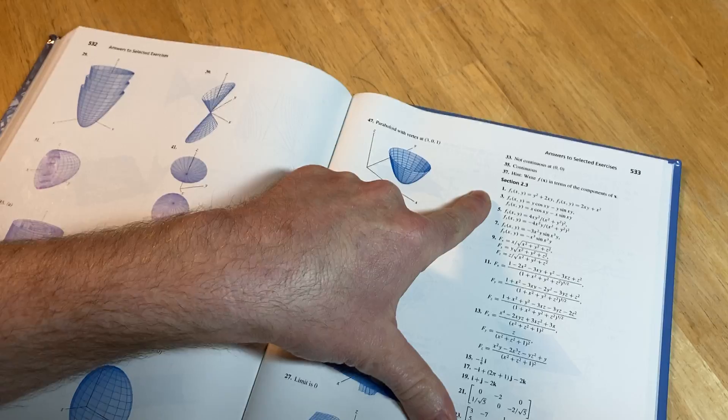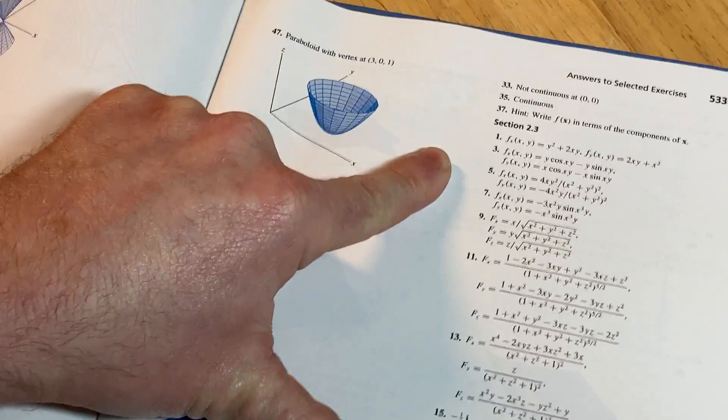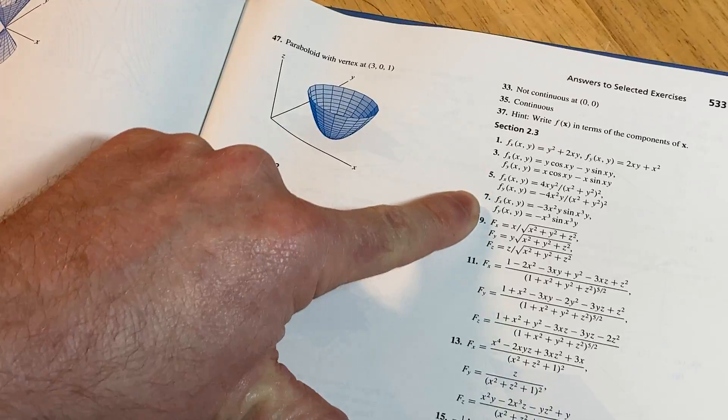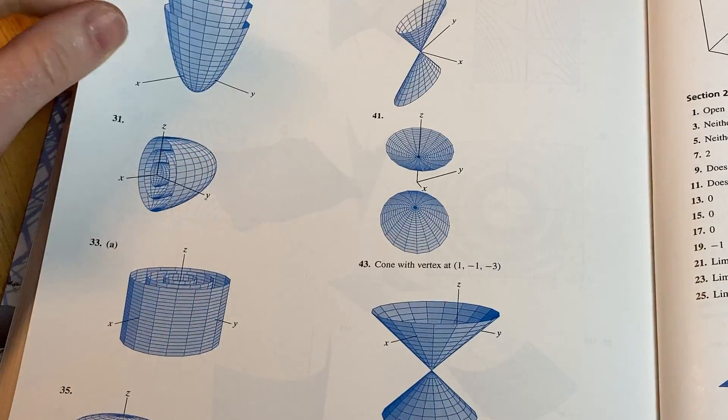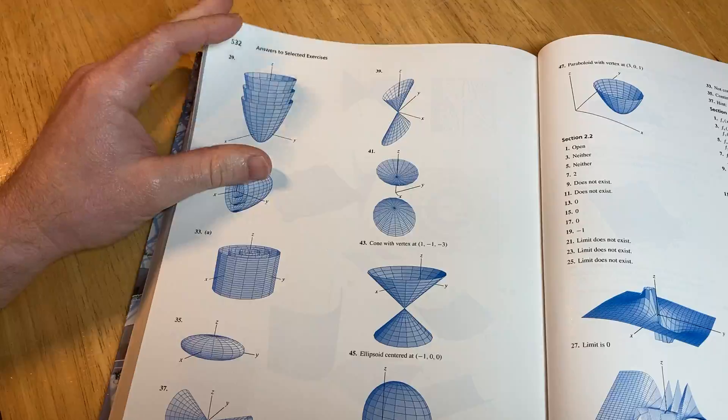For example, here you can see Susan provides answers to most of the problems. 1, 3, 5, 7, 9, 11. Looks like all the odd ones. So you do get answers, including answers that require some type of graphic.